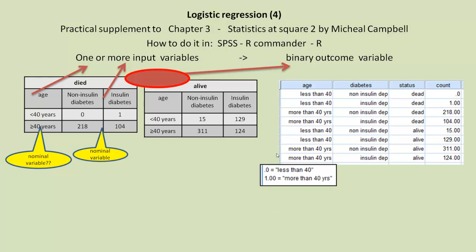Obviously we have to use value labels. So we have 0 equals less than 40 years and 1 equals more than 40 years. For diabetics, we've chosen 0 equals non-insulin-independent and 1 equals insulin-dependent diabetes. For status, we have 0 equals alive, 1 equals dead. The important thing to remember is which value you made 1, because when we get the estimates back, they're based upon the category which equals 1.